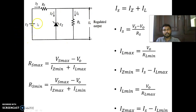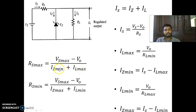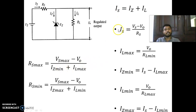Based on that we can design RS. RS maximum means — this is to control the supply current — RS max equals VS max minus VF divided by IZ min plus IL max. RS minimum means VS max minus VF divided by IZ max plus IL min. Actually IZ plus IL is IS. When IZ is minimum, IL will be maximum; when IZ is maximum, IL will be minimum. So RS minimum equals VS max minus VF divided by IS.